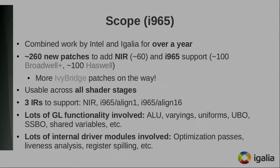The reasons for this are multiple. One is that this feature is useful across all shader stages, so we have to implement it across NIR and then both the scalar and the vector backends in the Intel driver. It affects a lot of GL objects: uniforms, varyings, UBOs, SSBOs, shared variables — all of these need to support 64-bit.